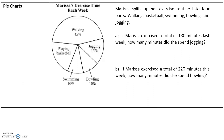Now let's talk about pie charts. Marissa splits up her time exercising into five parts: walking, basketball, swimming, bowling, and jogging. If Marissa exercised a total of 180 minutes last week, how many minutes did she spend jogging? The total is 180 minutes, and 15% of that is spent jogging. So what is 15% of 180? Remember, the word 'of' implies multiplication.